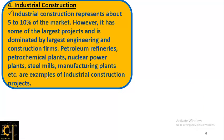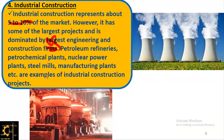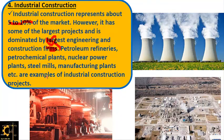The fourth type is industrial construction, which represents about 5 to 10 percent of the market. Although the smallest share, it includes some of the largest projects, dominated by the largest engineering construction firms — not small contractors. Examples include petroleum refineries, petrochemical plants, nuclear plants, steel mills, and manufacturing plants.